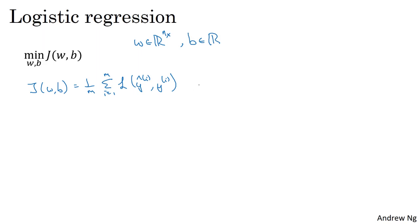So w is an n_x-dimensional parameter vector and b is a real number. To add regularization to logistic regression, you add to it lambda, which is called the regularization parameter, times lambda over 2m times the norm of w squared. The norm of w squared is just equal to sum from j equals 1 to n_x of w_j squared, or w transpose w, the square Euclidean norm of the parameter vector w.